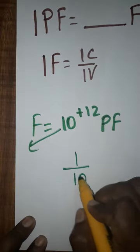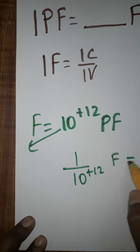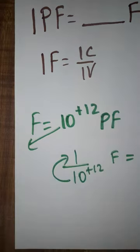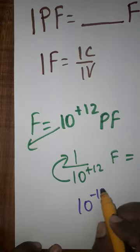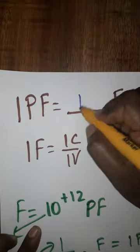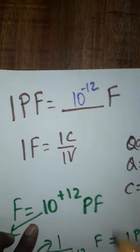From denominator, if you take this as a numerator, it means 10 power minus... sorry, minus 12. You will get 10 power minus 12 farads is equal to 1 picofarad. The answer will be 10 power minus 12. Thank you.